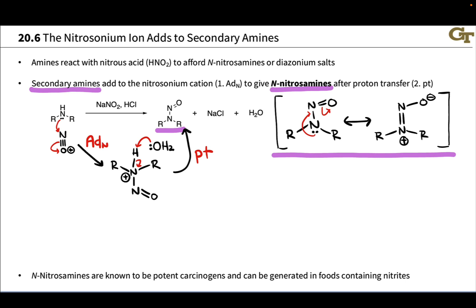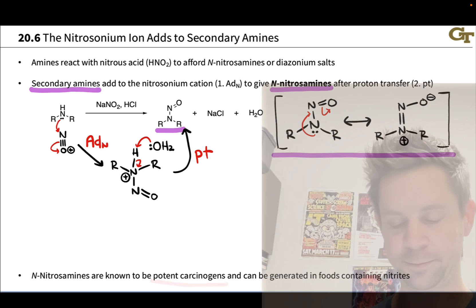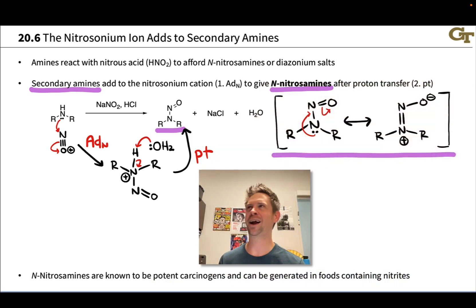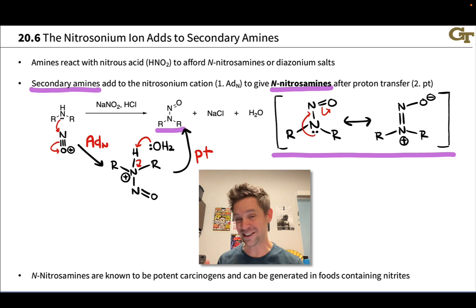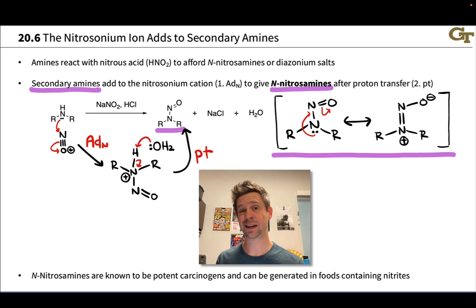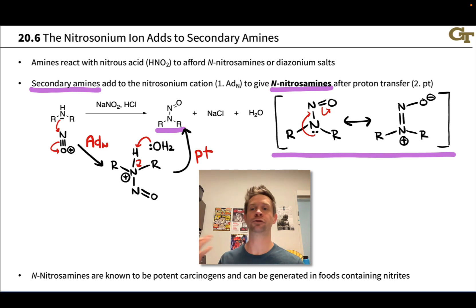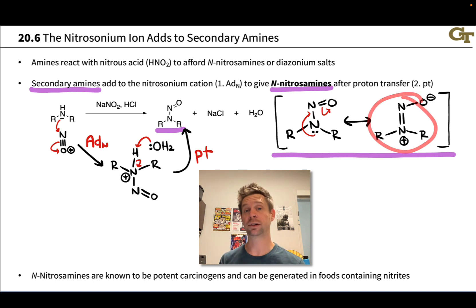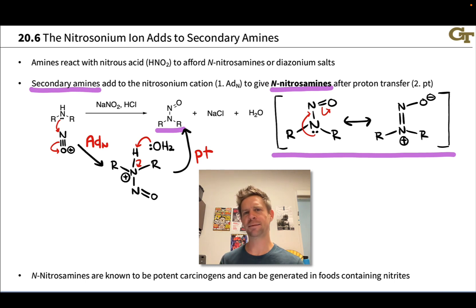Nitrosamines are most famous for being quite potent cancer-generating agents — carcinogens. They can be generated in foods containing nitrites, such as cured meats. Meats cured in solutions containing nitrites can produce nitrosamines via reactions of the amino groups in amino acids in the meat with nitrous acid generated under acidic conditions. Nitrosamines can give rise to strong alkylating agents — very strong electrophiles that can alkylate DNA, bond to DNA, and disrupt the structure of DNA.